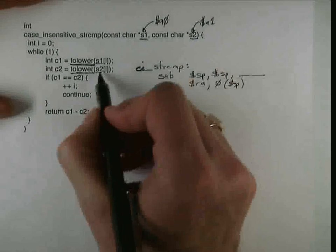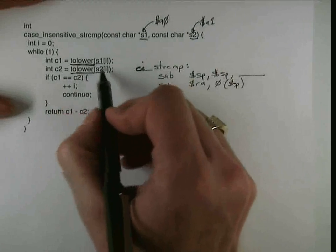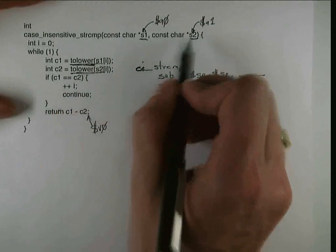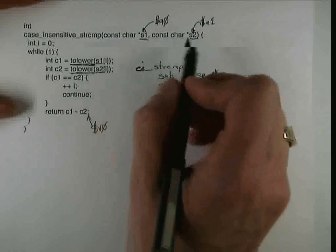Likewise, S2. S2 is even simpler because the first use of S2 is after the first call to tolower. So we definitely know that's going to need to be saved to be used.